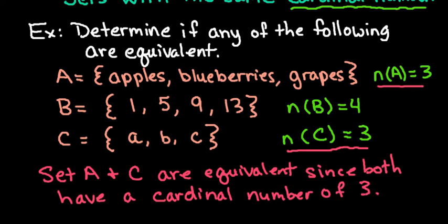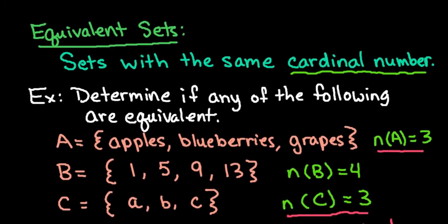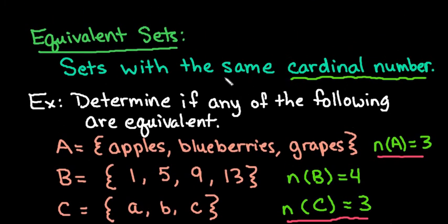So again, equivalent sets do not have to have the same elements. The only thing that has to be true is the number of elements have to be the same. Remember that cardinal number simply means the number of elements in the set. And in order to be equivalent, they have to be the same.